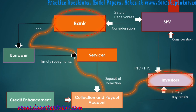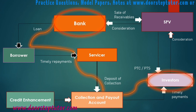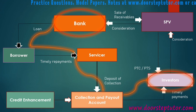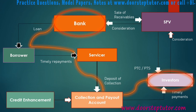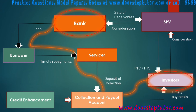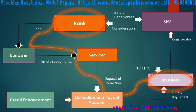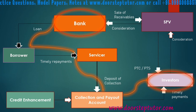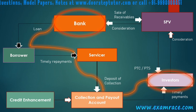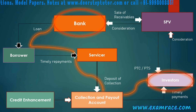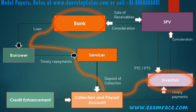PTC stands for Pass Through Certificate. Whatever return investors earn is on a pro-rata basis. When the SPV takes money from the collection and payout account, it must distribute it on a pro-rata basis — it cannot pay two investors today and the remaining eight tomorrow. Even if the SPV has only 0.1 paisa, it has to distribute it to all 10 investors equally.